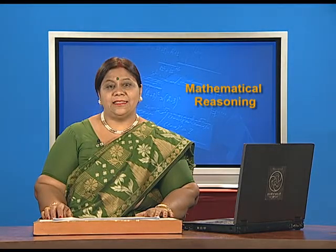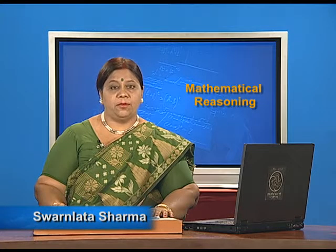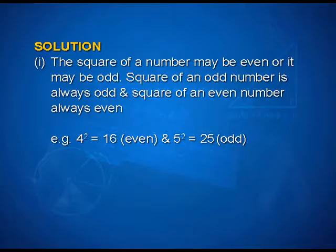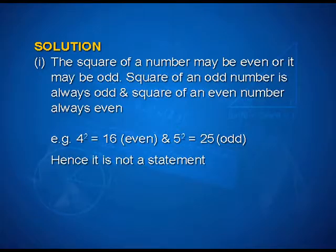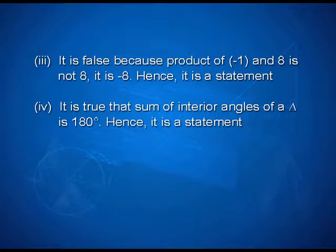Hello students, let us discuss the solutions to the homework problem. First, the square of a number may be even or it may be odd. The square of an odd number is always odd and the square of an even number is always even. For example, 4 squared is equal to 16, which is an even number, and 5 squared is equal to 25, which is an odd number. Hence it is not a statement.